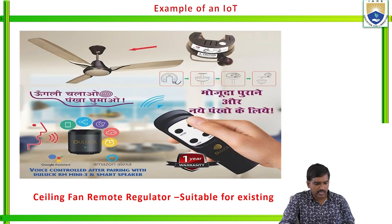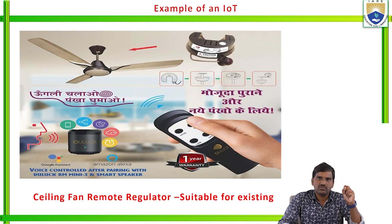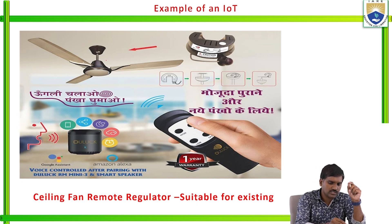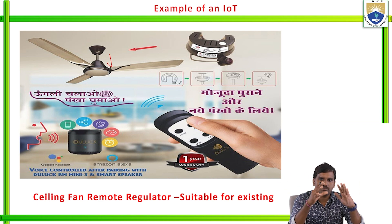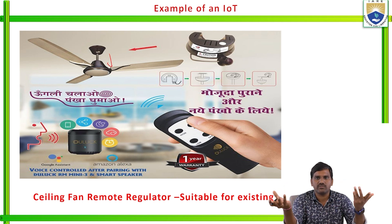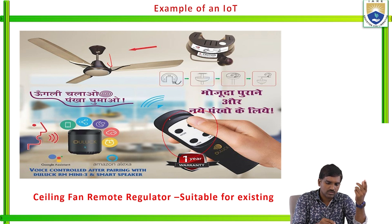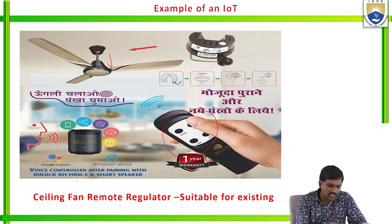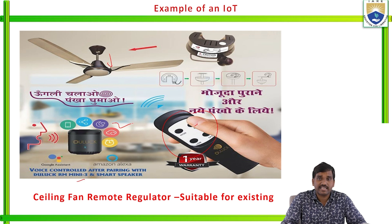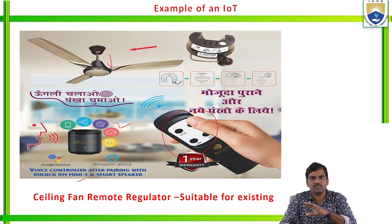This is an example of an IoT ceiling fan. Before connecting to the internet, it is a normal fan. When you connect it to the internet using some hardware, it transforms into an IoT device. You can then operate it with a remote. After pairing with a dual-up RM Mini 3 smart speaker, voice control becomes possible. By using this speaker, we can connect the fan to the internet, transforming it into a smart IoT device.